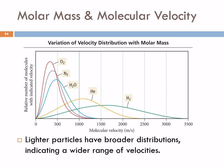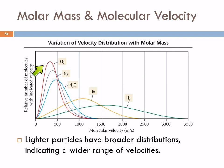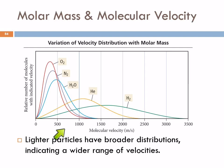Here's a graph of the relative number of molecules with a specific velocity versus molecular velocity in meters per second for different gases: oxygen (32 g/mol), nitrogen (28 g/mol), water (18 g/mol), helium (4 g/mol), and hydrogen (2 g/mol). The lighter particles have broader distributions and a larger average velocity — they're moving faster but also have more variability in velocity.